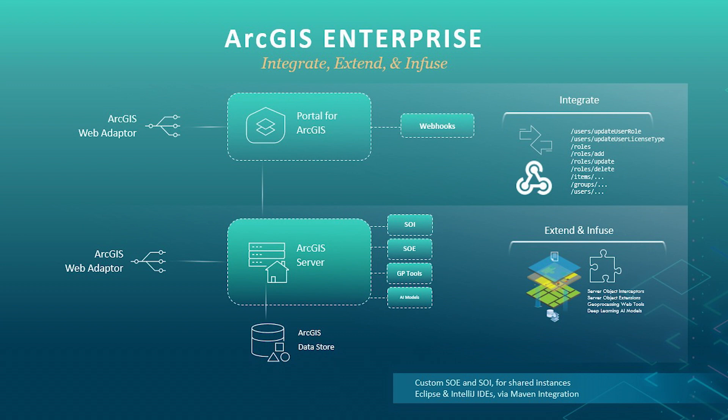If you'd like to extend the capabilities of the geoservices themselves, you could create custom server object extensions or interceptors, which are part of the enterprise SDK for adding to or altering map or image services. We have now added shared instance SOI and SOE support to map services, so your custom code can also benefit from this new pattern — very suitable for optimal use of resources during varying loads.